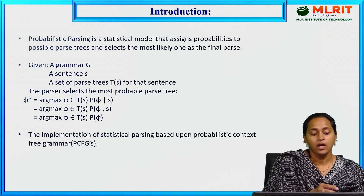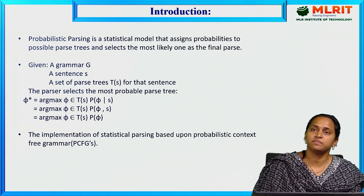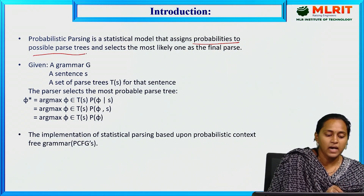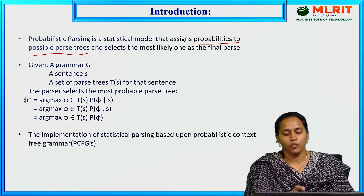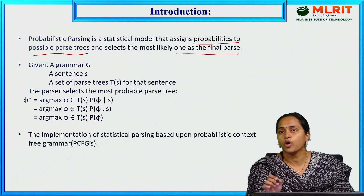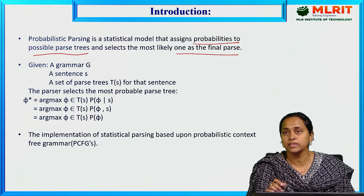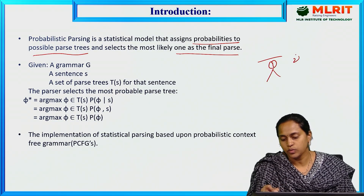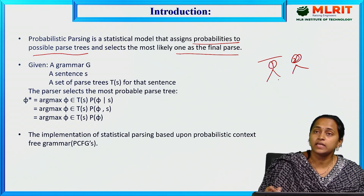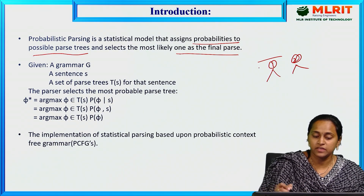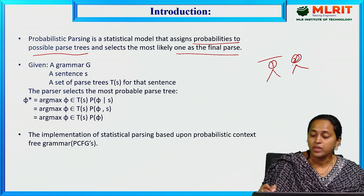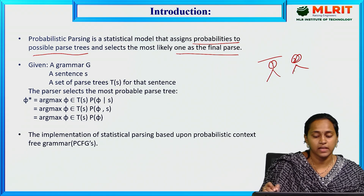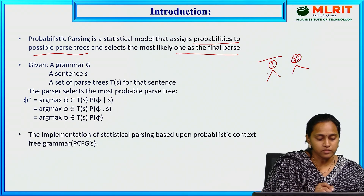Coming to the introduction part: what is the meaning of probabilistic parsing? It is a statistical model that assigns probabilities to the parsed trees. Our sentence may contain two possible trees. Based on the most likely probability, we can select that particular tree.